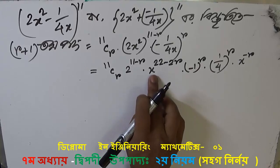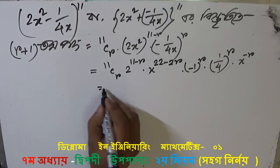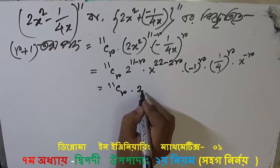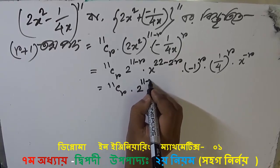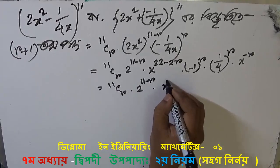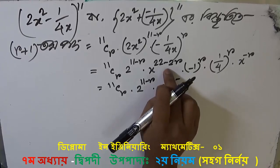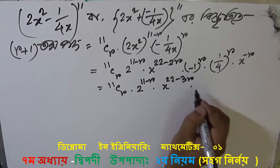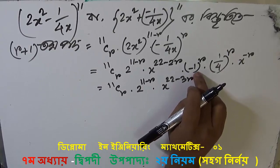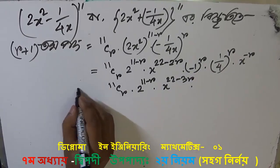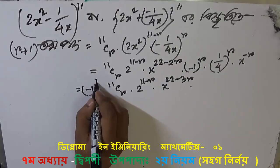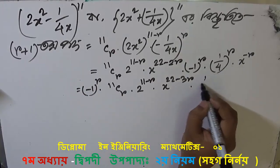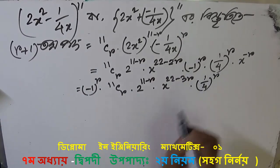Now, 1 by 4x to the power r — we will add 2 to the power 11 minus r, x to the power 22 minus 2r, and r minus 3r, and we will add minus 1 to the power r, and we will add 1 by 4 to the power r.